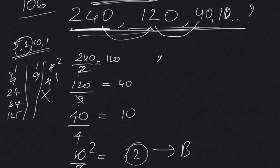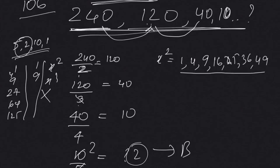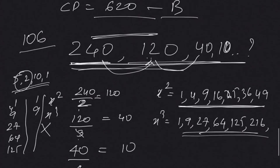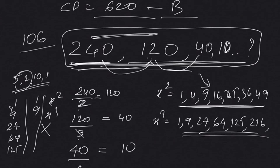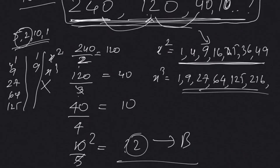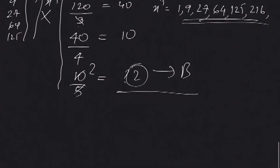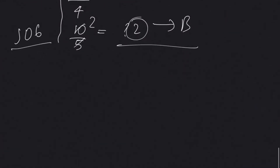This series is not a standard x-squared or x-cubed series. For x squared: 1, 4, 9, 16, 25, 36, 49. For x cubed: 1, 8, 27, 64, 125, 216. This question is not of those types, so you have to think out of the box and find a relation. We were able to solve it — answer is B.